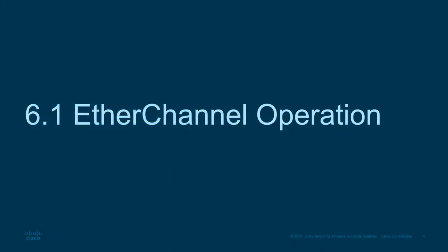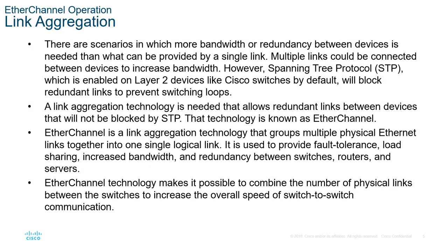EtherChannel operation. EtherChannel is a link aggregation technology. There are scenarios in which more bandwidth or redundancy between devices is needed than what can be provided by a single link. However, STP blocks redundant paths, so providing more bandwidth by having multiple redundancy conflicts with STP rules. With EtherChannel, the switch is able to see those redundant links as one, so STP will not block the redundant link. That's the use of link aggregation.